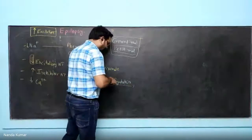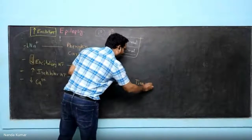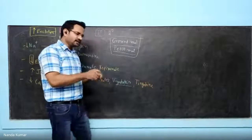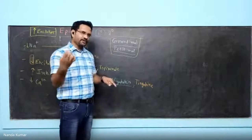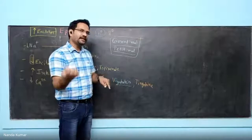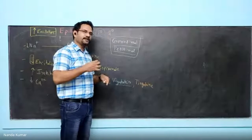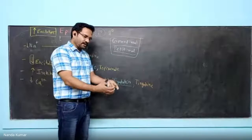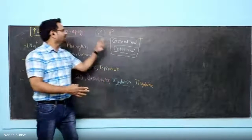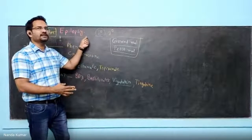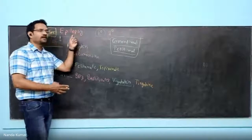Another drug is tiagabine. Once GABA is released, it can either be metabolized by GABA-transaminase or taken back up into the neuron by the GABA reuptake transporter. Tiagabine inhibits the reuptake transporter, so at the synaptic junction GABA levels increase. Increased GABA reduces excitation and is used to treat epilepsy.